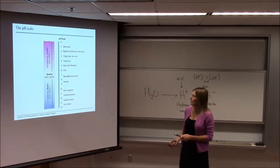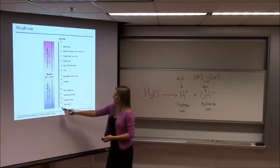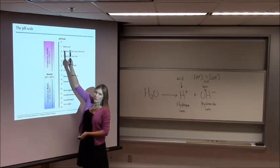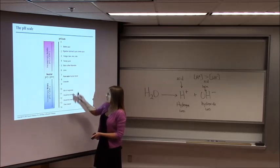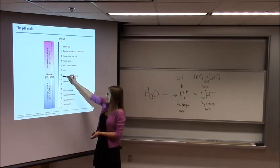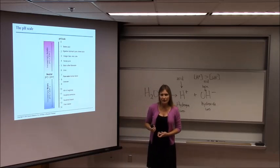And we looked at the pH scale, which goes from 0 to 14. So 14 is going to be a very strong base. 1 is going to be a very strong acid. So remember that anything below pH 7 is an acid. Anything above pH 7 is considered a base. pH 7 is considered neutral.